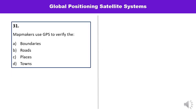Question number thirty-one: Mapmakers use GPS to verify — boundaries, roads, places, or towns? Mapmakers use GPS to verify boundaries, so A is the correct answer.